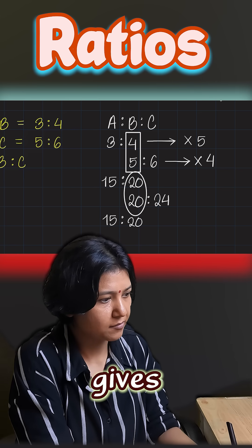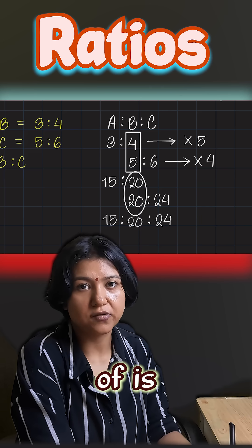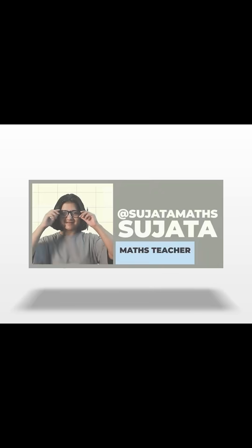Which gives me fifteen is to twenty is to twenty-four. That's the ratio of a is to b is to c. Thank you.